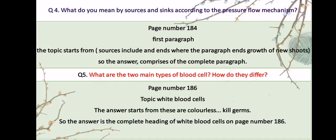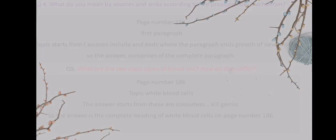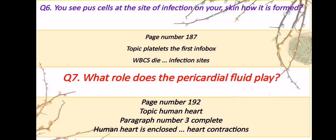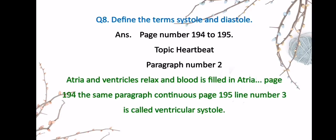Questions 4 and 5 are written on screen along with their answers. Go to page 184 to find the answer for question 4, and question 5's answer is on page 186. Question 6 answer is on page 187 under the topic 'platelets' — the first info box under that heading, starting from 'the WBCs die' and ending at 'infection sites.' Question 7 — what role does the pericardial fluid play — is on page 192 under the heading 'human heart,' paragraph 3 complete. Question 8 — define systole and diastole — the answer is on pages 194 to 195, and you can also refer to previous session slides for complete definitions.